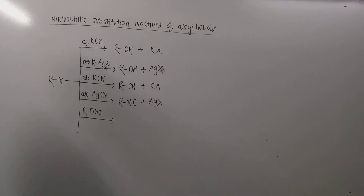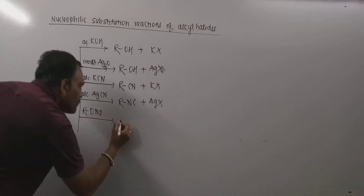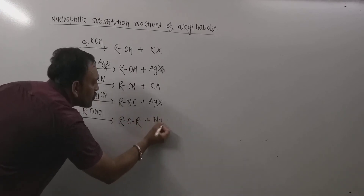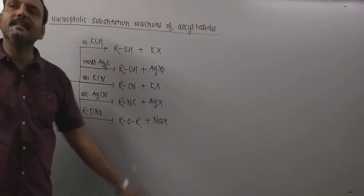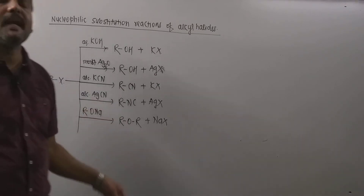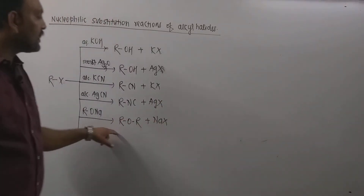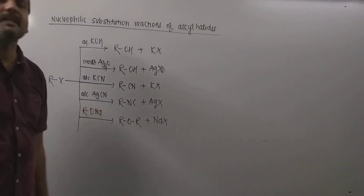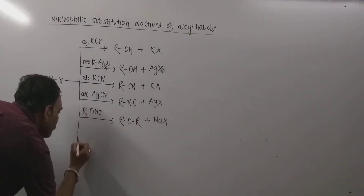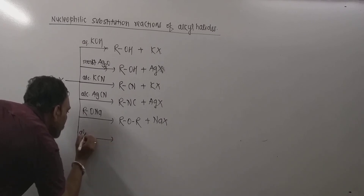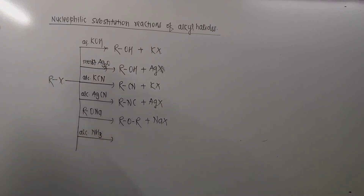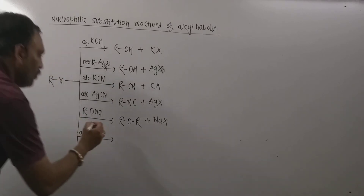When alkyl halides are treated with sodium alkoxides, they react with alkyl halides producing ethers — that is ROR — along with sodium halide. By this reaction one can prepare simple as well as mixed ethers. This reaction is very famous and it is called Williamson synthesis.